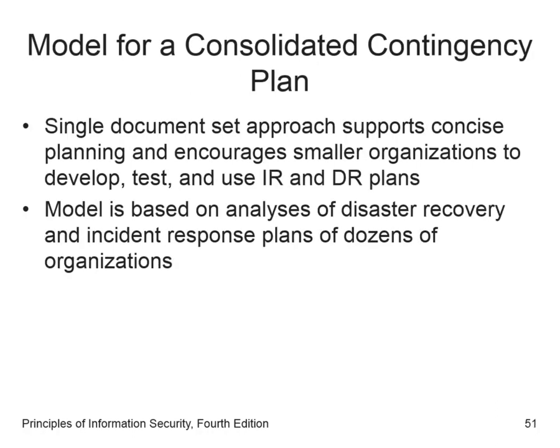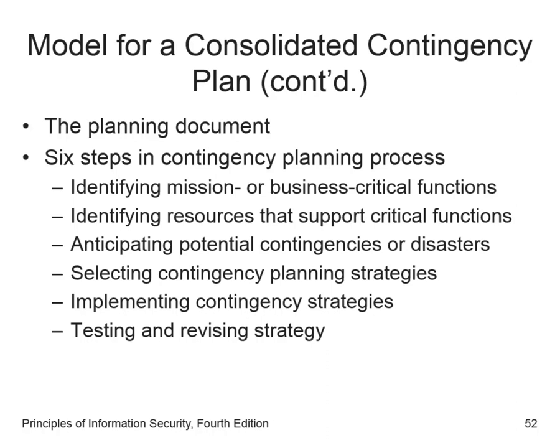The model presented for a consolidated contingency plan is based on analysis of disaster recovery and incident response plans of dozens of organizations. There are six steps in the contingency planning process: first, identifying the mission or business-critical functions; identifying the resources that support the critical functions; anticipating potential contingencies or disasters; selecting contingency planning strategies; implementing the contingency strategies; and testing and revising the strategy. The planning document will include before, during, and after the incident.